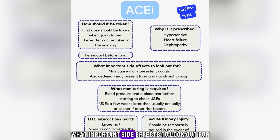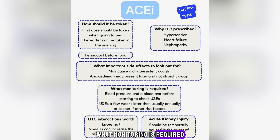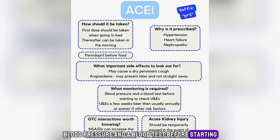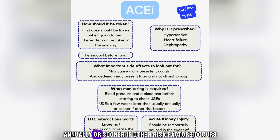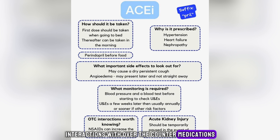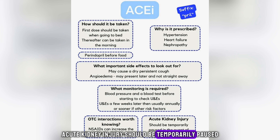What important side effects to look out for? It may cause a dry persistent cough and angioedema; it may present later and not straight away. What monitoring is required? Blood pressure and a blood test before starting; also check urine and electrolyte test. Urine and electrolyte test a few weeks later, then usually annually or sooner if other risk factors occur. Interactions with over-the-counter medications: non-steroidal anti-inflammatory drugs can increase the risk of kidney damage. Acute kidney injury risk — should be temporarily paused in the event of severe dehydration.